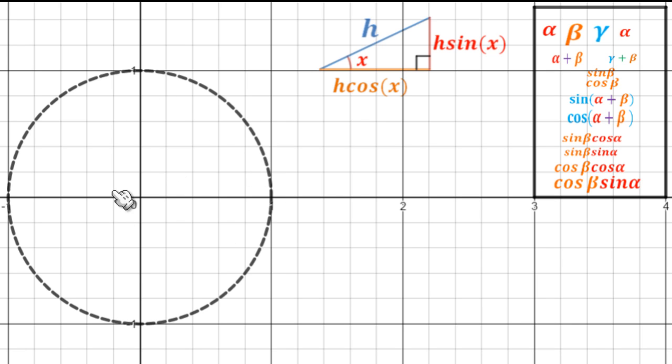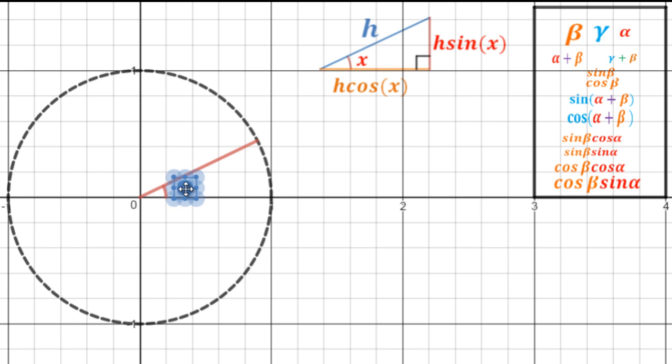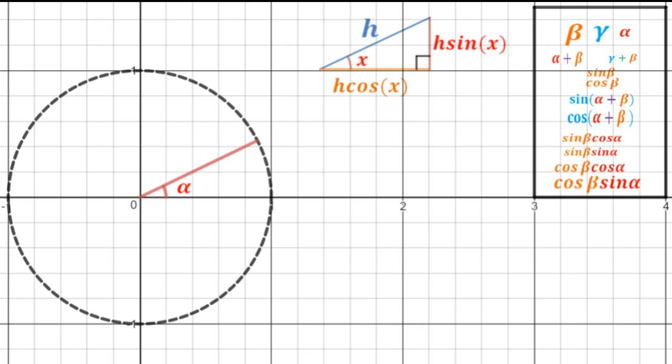So we need our first angle and our first angle is going to be alpha, and similarly we will need our second angle and that angle is going to be in orange, it's going to be beta.